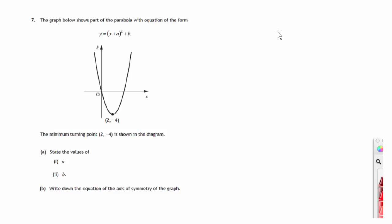This is question 7 from paper 1 of the 2015 National 5 SQA Maths exam. We're given a graph of a parabola, y equals x plus a, all squared plus b. We know that the minimum on the graph is (2, negative 4), and we're asked to state the values of a and b, and also write down the axis of symmetry of the graph.